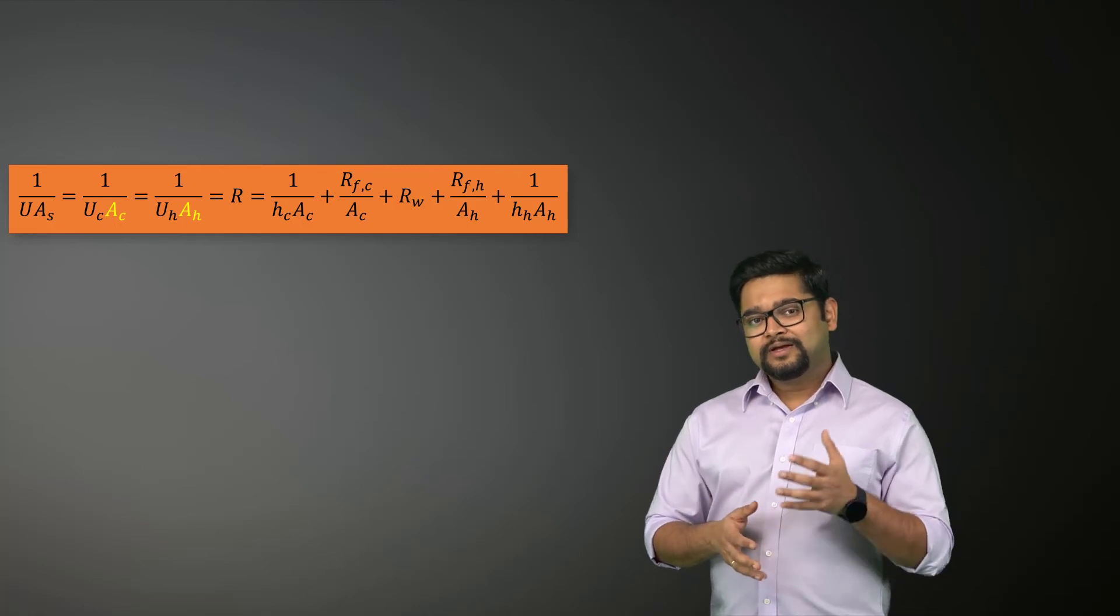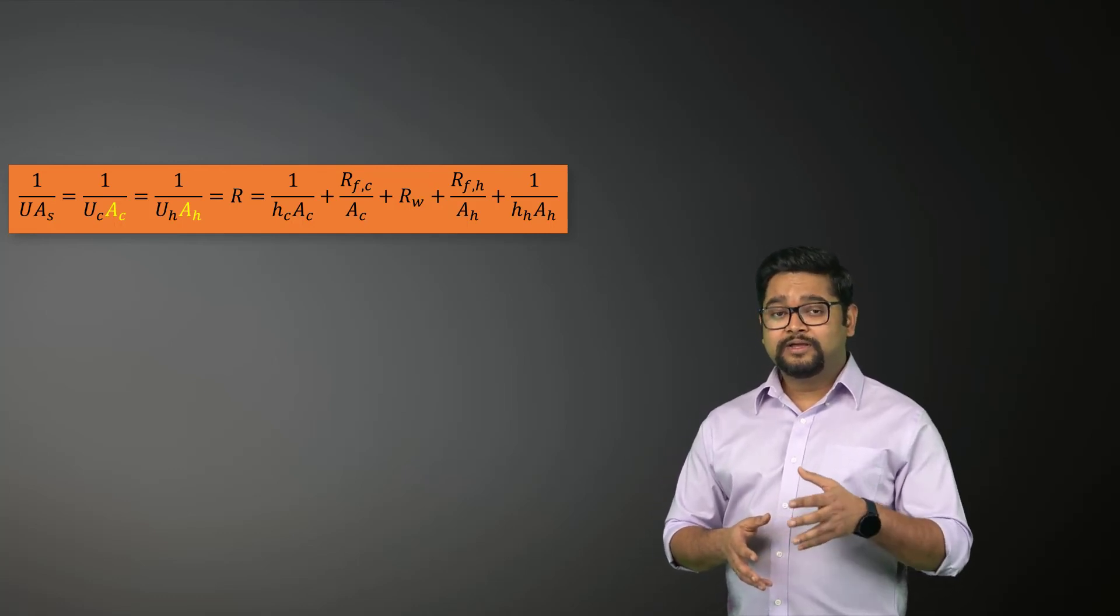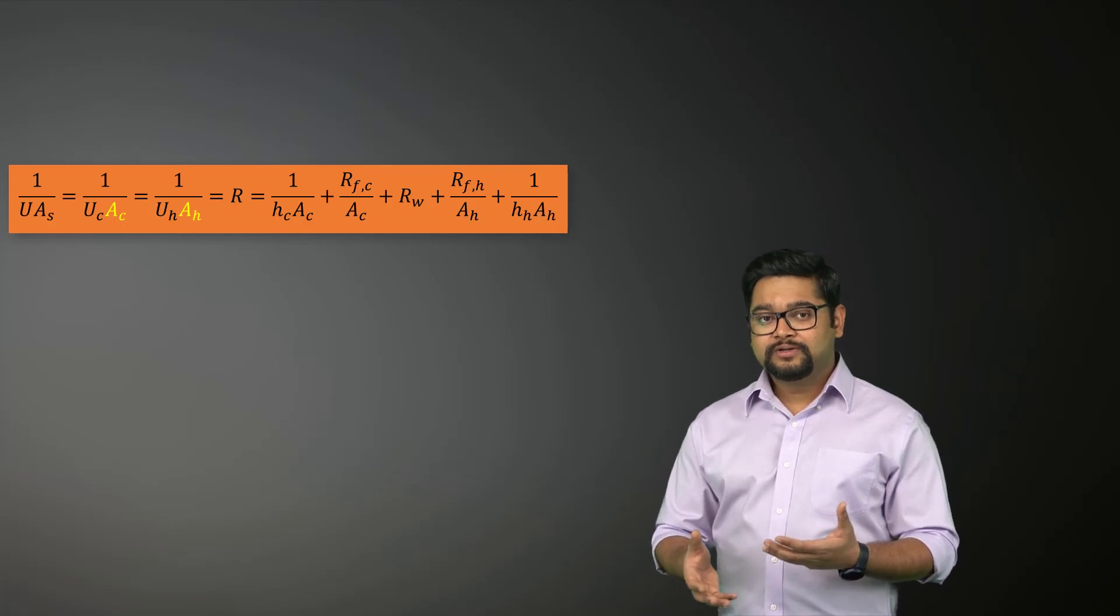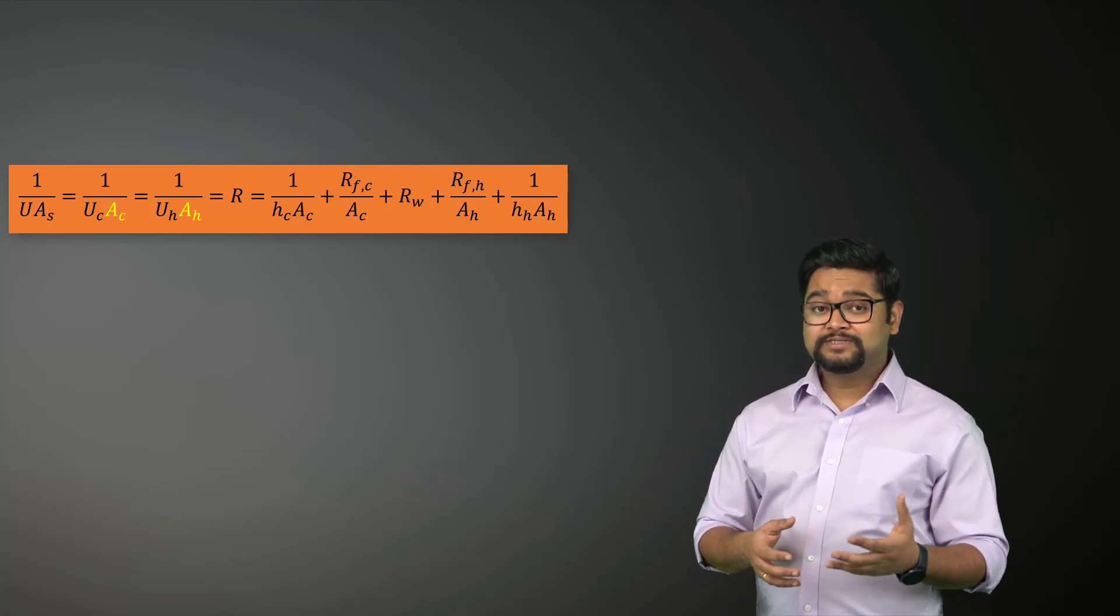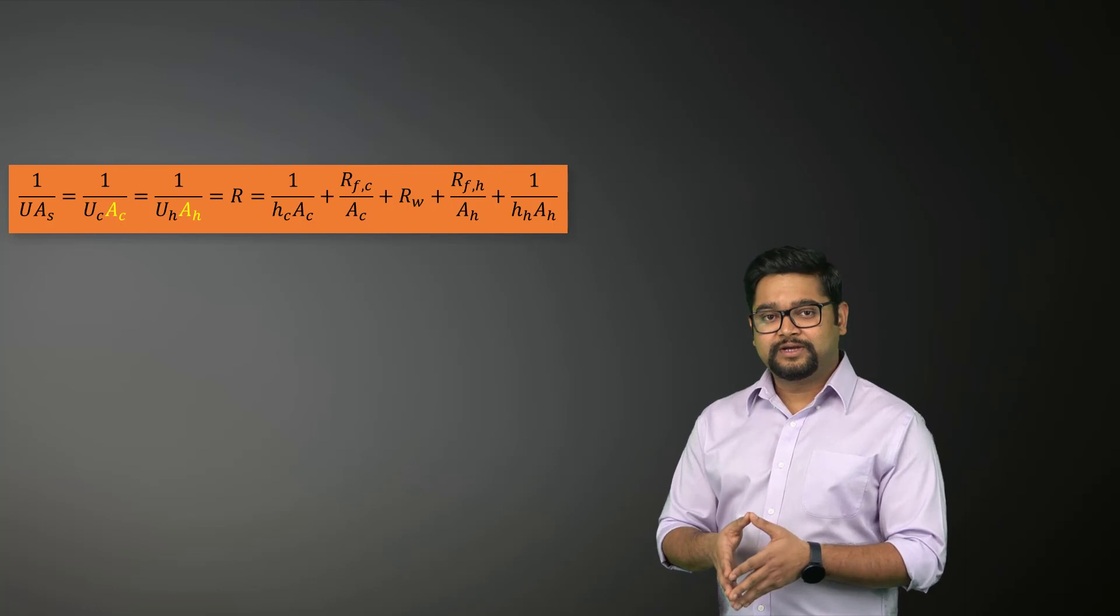For example, consider the case where one side of the tube wall is finned and the other is not. The surface area of the fin side will be several times that of the unfin side.